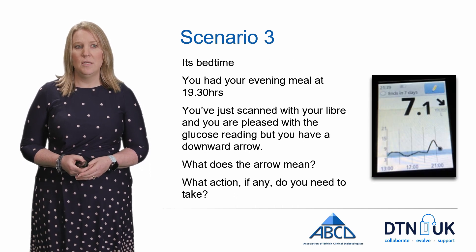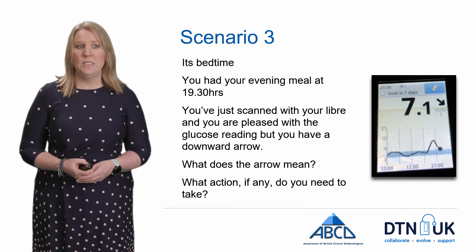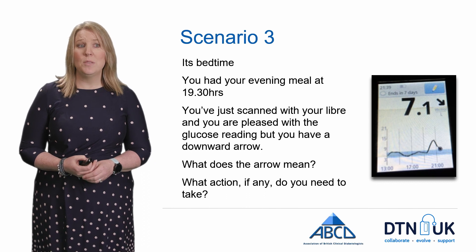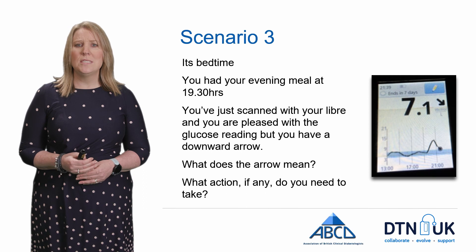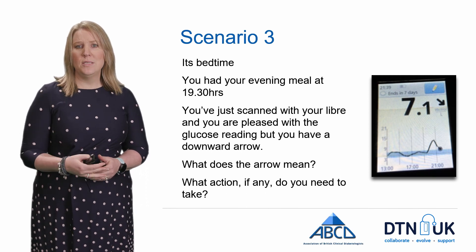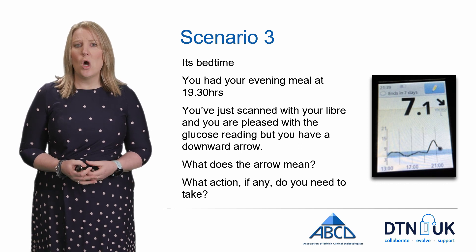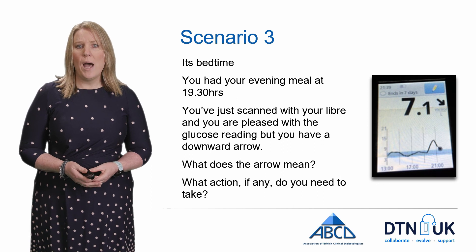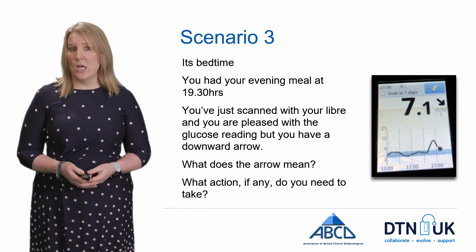Scenario three: it's bedtime. You had your evening meal at about half past seven. You've just scanned your Libra and are pleased with the blood glucose level, but you have a downward arrow. What does that arrow mean? Where will your blood glucose level be in 30 minutes? Do you still have active insulin on board? What action would you take, if any? Do you need to take any carbohydrate?